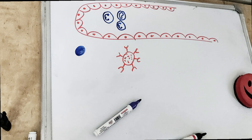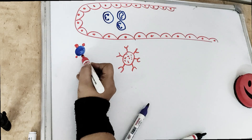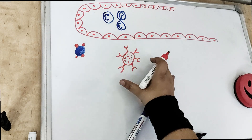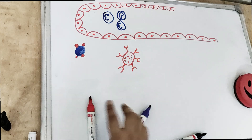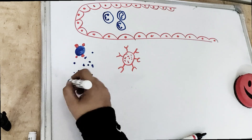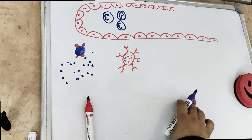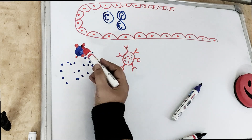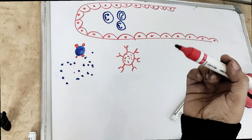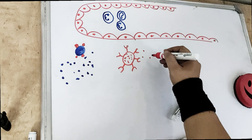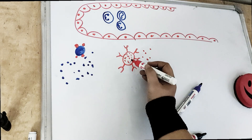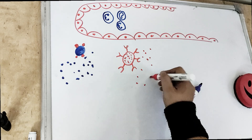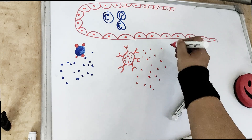When bacteria comes and attacks, there are mast cells already present in the fluid, waiting for the bacteria. When the bacteria releases endotoxin, these mast cells have specific sites for the antigens present on the bacteria. So these mast cells degranulate — there is a lot of granular substance present in the mast cell, and it breaks when it fuses with the antigen, releasing all the granule contents.